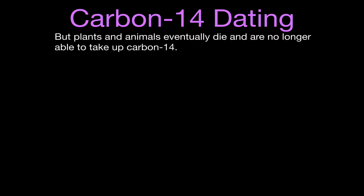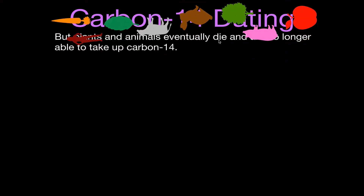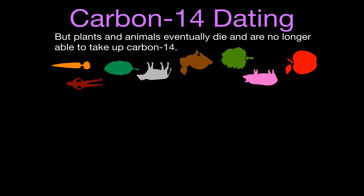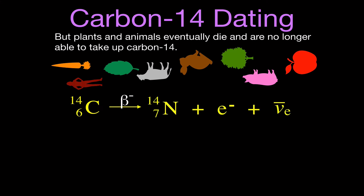Unfortunately, at some point all plants and animals are going to die. When they die, they'll no longer be able to take up any more carbon-14. The carbon-14 they already have will continue to decay, but it will not be replaced by new carbon-14 because the plant is no longer breathing and the animal is no longer eating. That means the concentration of carbon-14 is going to decrease, as carbon-14 decays through beta minus decay into nitrogen.